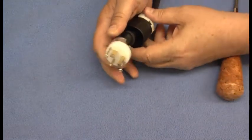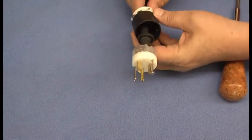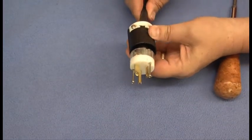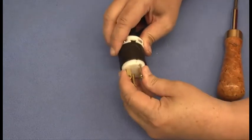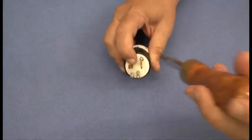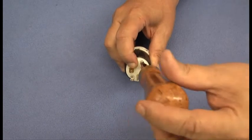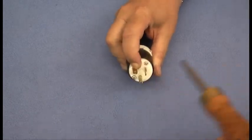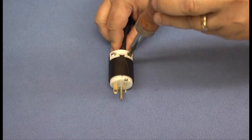Once those are securely fastened, we move the plug body up over the spades, push it forward, and these two screws will hold the plug together. Then we tighten down